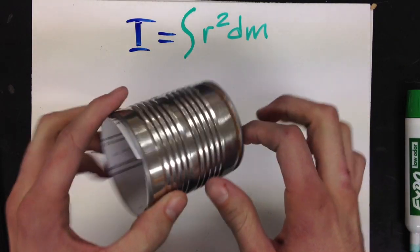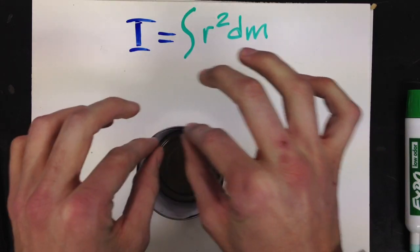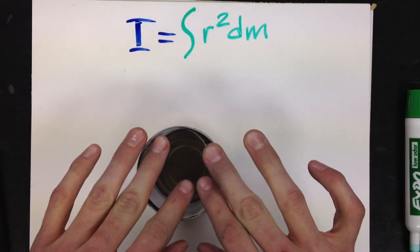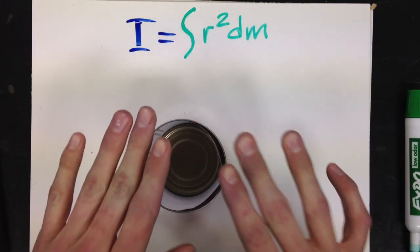We are going to integrate by looking at a very small portion of the cylinder. And I've got this as just a piece of paper inside the cylinder.